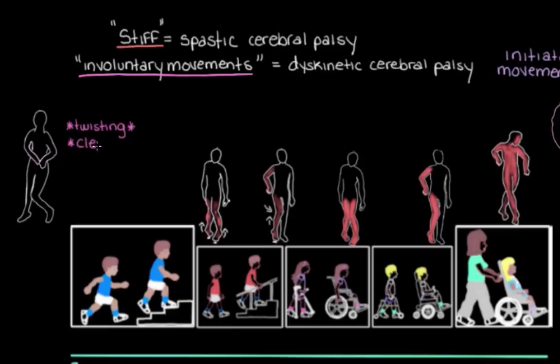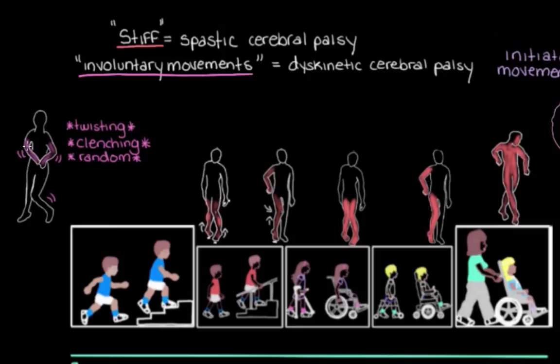Or the involuntary movements might involve clenching and unclenching the fingers, making it really hard to hold and use objects like a pen. They might also be more random — arms and legs moving around in an unpredictable way — or a combination of random movement and twisting into unwanted positions. These involuntary movements usually worsen when the person is stressed, upset, or anxious, and they often go away when the person is sleeping.